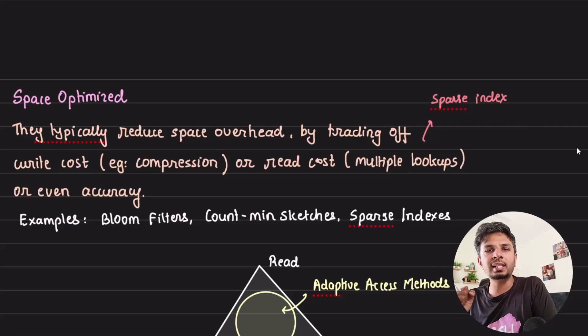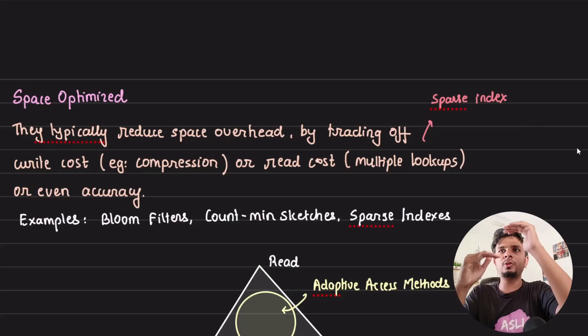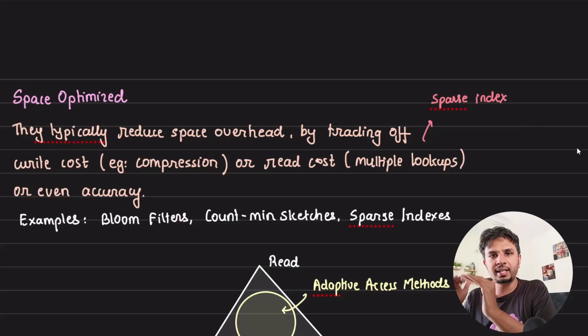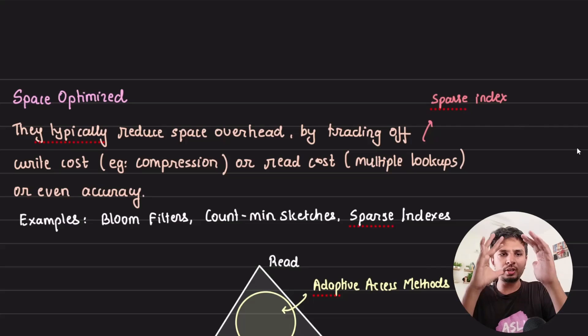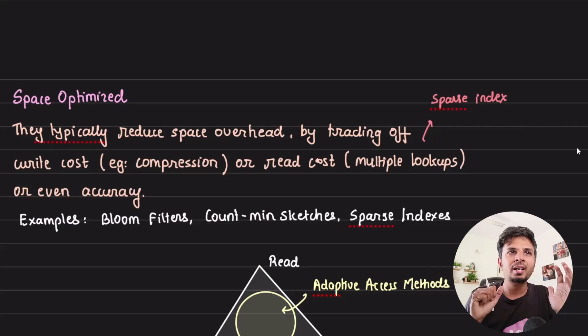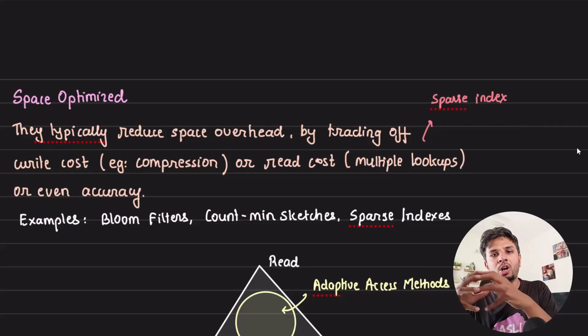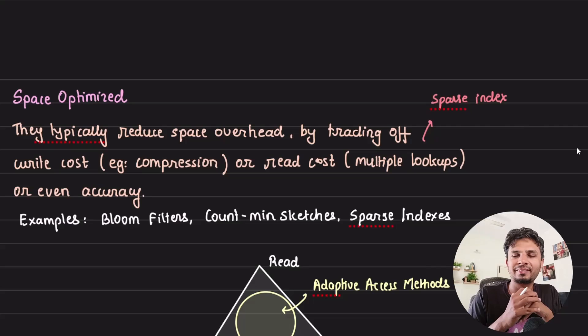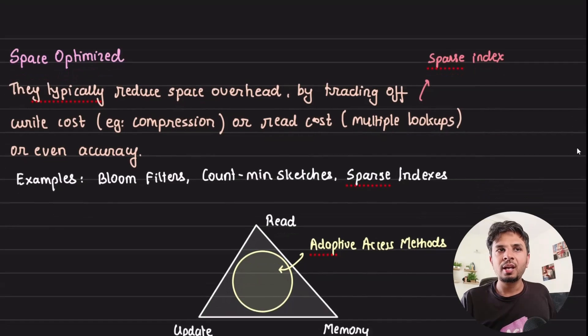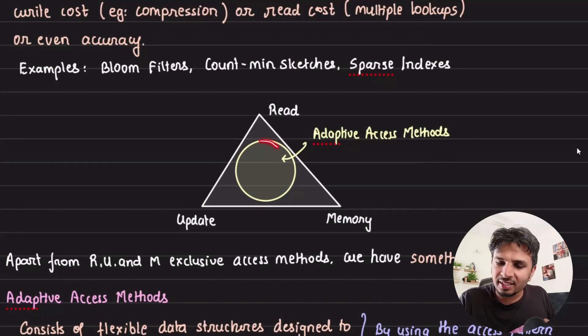Another example is sparse index. If you create a dense index, you'd have one entry for every single entry in your index, so it's not space-optimized. You reduce that, but now we're increasing the number of lookups needed to reach certainty because you have to do multi-level lookups. When you're optimizing on space, you have to make your reads slightly more costly.